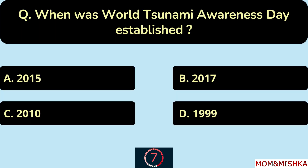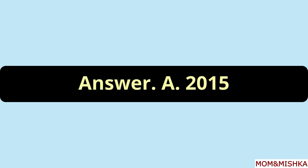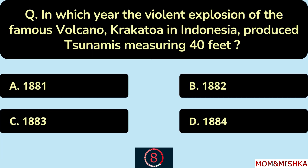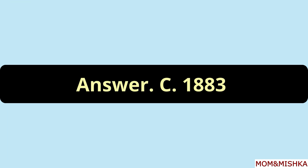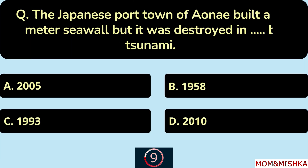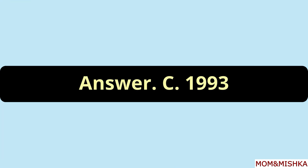World Tsunami Awareness Day was established in year 2015 — option A. The violent explosion of the famous volcano Krakatoa in Indonesia, which produced tsunamis measuring 40 feet, occurred in year 1883 — option C. The Japanese port town of Aona built a 4.5-meter sea wall, but it was destroyed in year 1993 by a tsunami — option C.